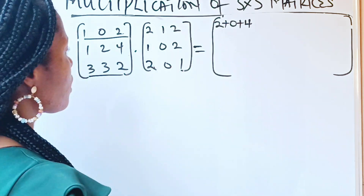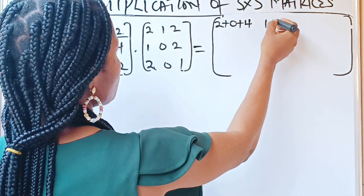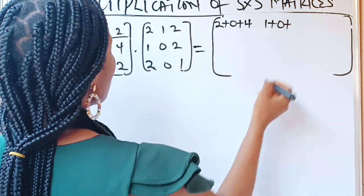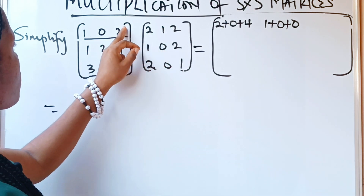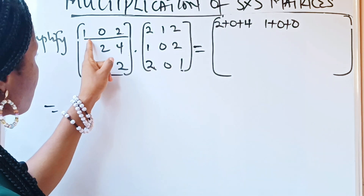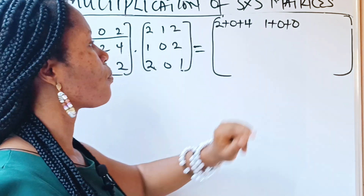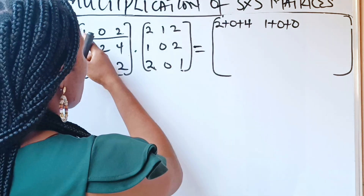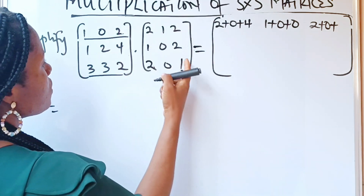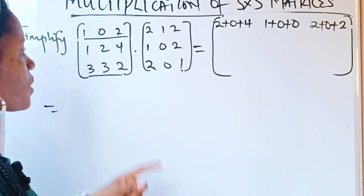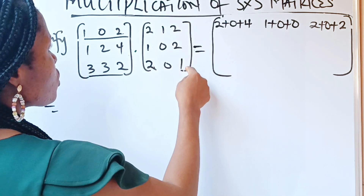We are finished forming the first number of the first row. Now the first row multiplies the second column: 1 times 1, plus 0 times 0, plus 2 times 0, giving 1+0+0=1. Then the first row multiplies the third column: 1 times 2, plus 0 times 2, plus 2 times 1, giving 2+0+2=4. We are through with the first row.